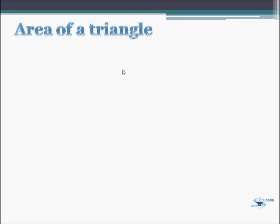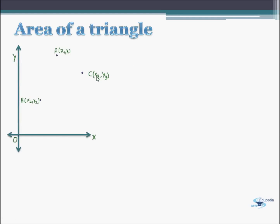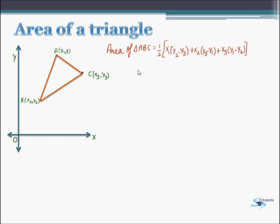Suppose we are given the vertices of a triangle on the Cartesian plane as A, B and C, and their coordinates are represented by x1, y1, x2, y2 and x3, y3 respectively. Then the area bounded by these vertices is given by this expression.